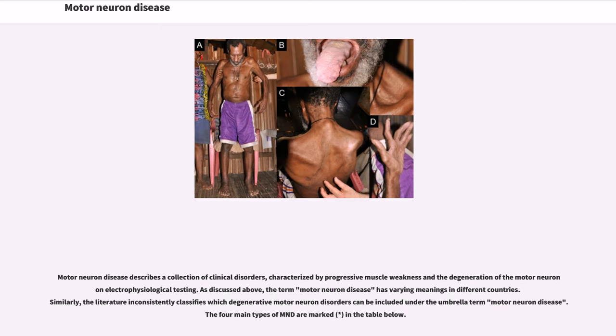Motor neuron disease describes a collection of clinical disorders, characterized by progressive muscle weakness and the degeneration of the motor neuron in electrophysiological testing. The literature inconsistently classifies which degenerative motor neuron disorders can be included under the umbrella term motor neuron disease. The four main types of MND are marked in the table below.